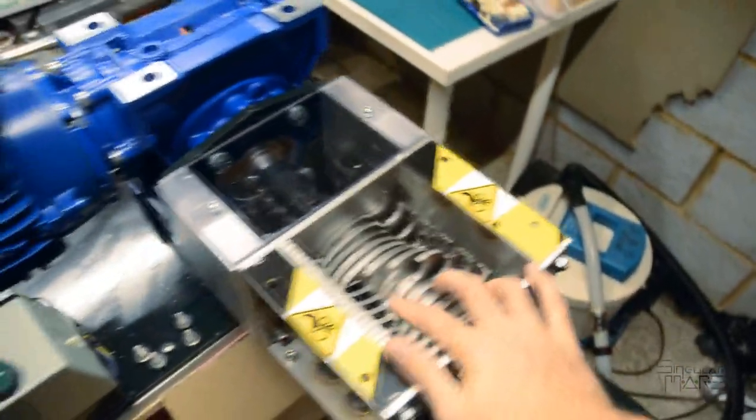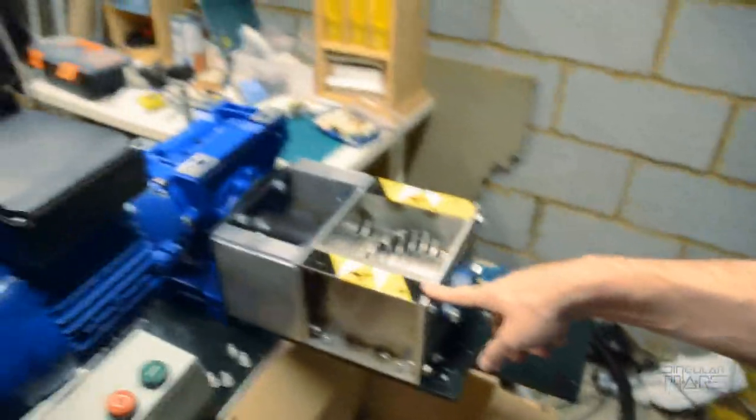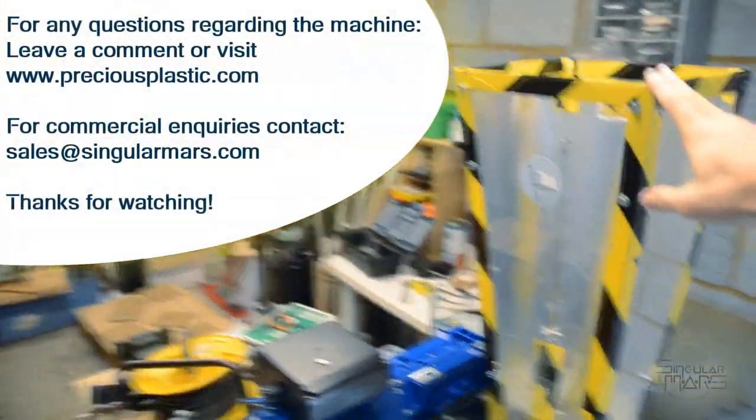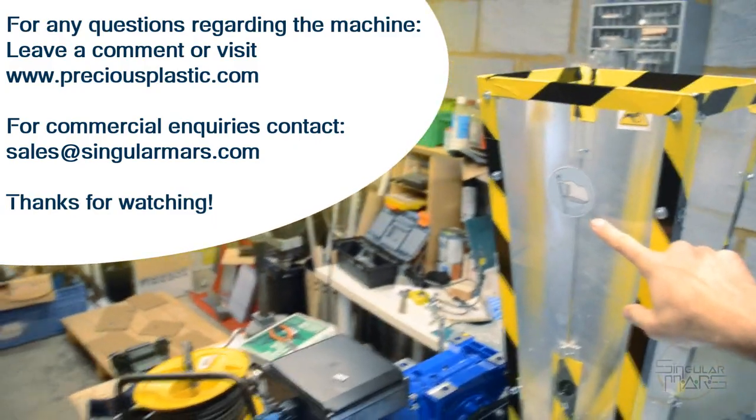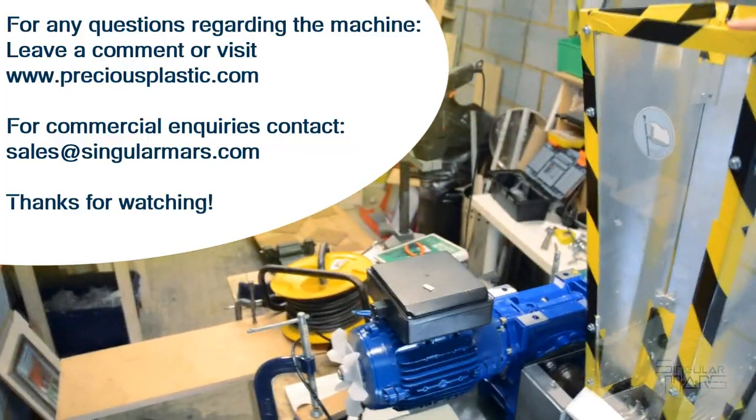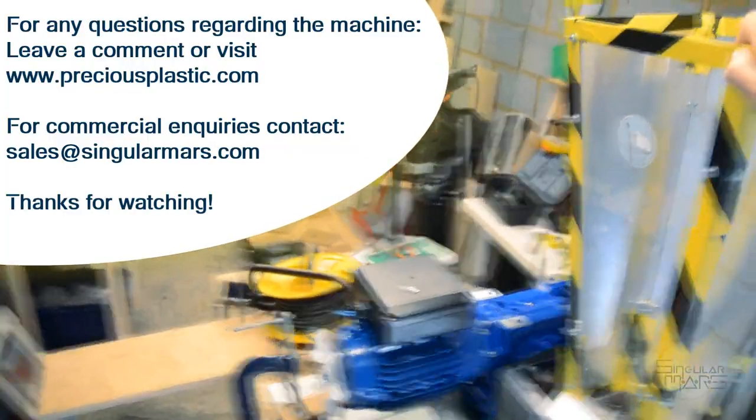Once the blades have been cleaned, we can put back the cover, fit it with the screws, put the loader hopper back again, the sieve back again, and it's ready to keep shredding. That's all for now, if you have any questions, please leave them below, or go to preciousplastic.com forum, for any inquiries about how to get one in the UK, you can contact sales at singularmars.com. Thank you!